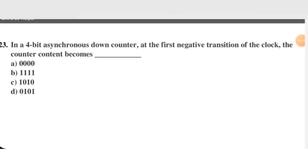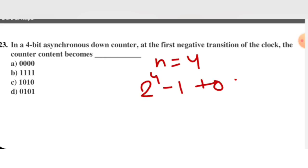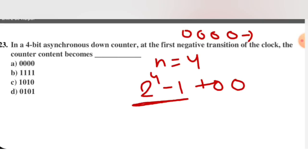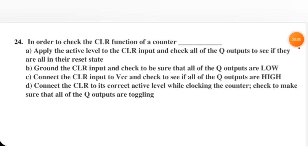Next question: in a 4-bit asynchronous down counter, at the first negative transition of the clock, the counter count becomes — small n equals 4, so the counting range is 2^4 − 1 to 0. Initially the counter is at 0000. At the first negative transition, it reaches the maximum value, which is 2^4 − 1 equals 16 − 1 equals 15. In binary, 15 is written as 1111. B is the right option.